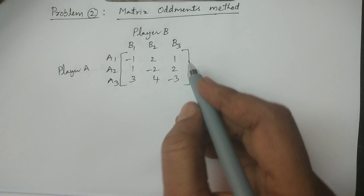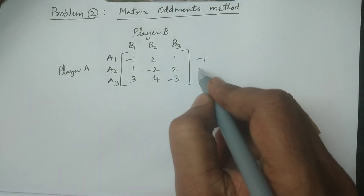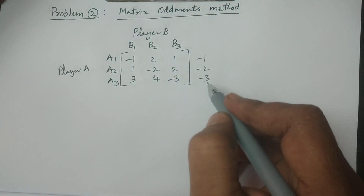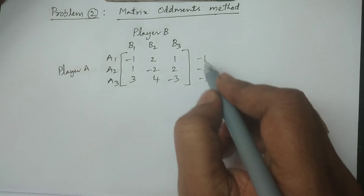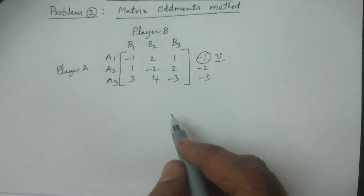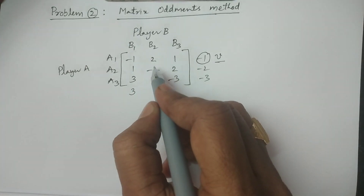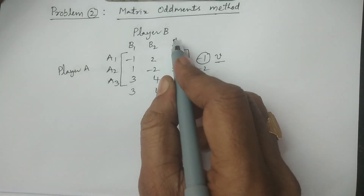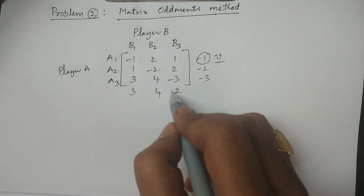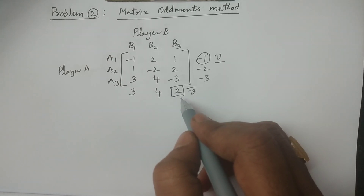Calculate the saddle point: row minima — first row minimum is minus one, second row minus two, third row minus three. Among these, the maximum value is minus one, so this is the maximin value. Column maxima: second column four, third column two, and the minimum value is two — this is the minimax value.